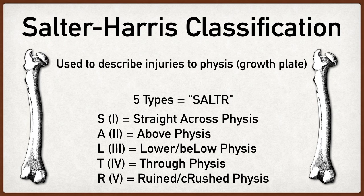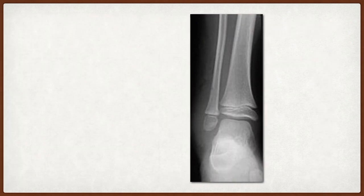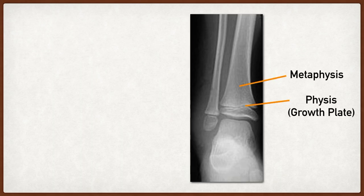We're going to talk about each of these independently. S stands for straight across the physis or growth plate, A stands for above, L stands for lower, T stands for through, and R stands for ruined or crushed. The orientation to remember is that the metaphysis will be superior to the growth plate or the physis, and the epiphysis will be below that growth plate.